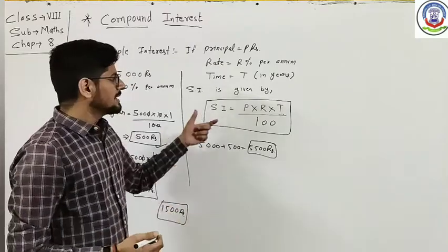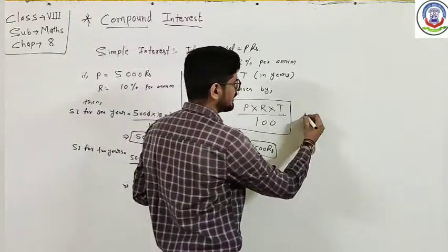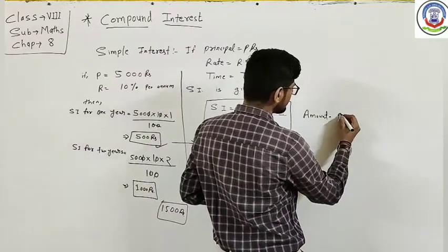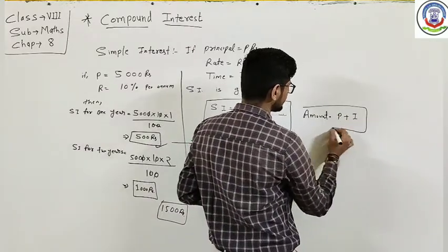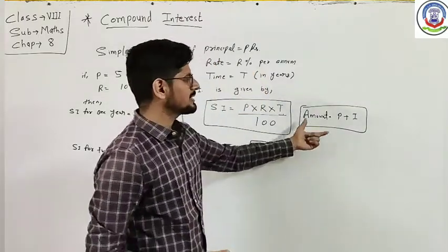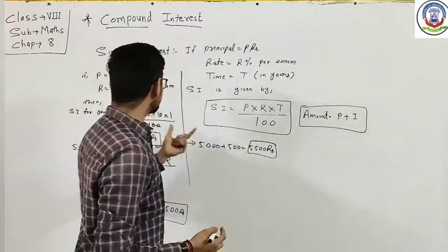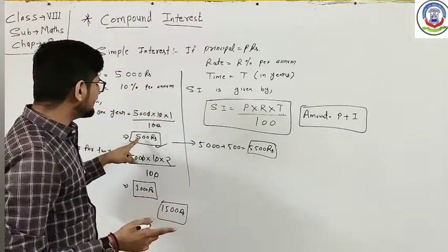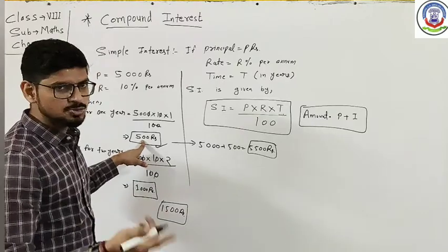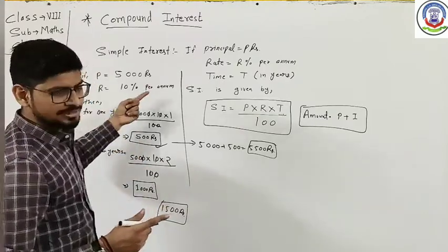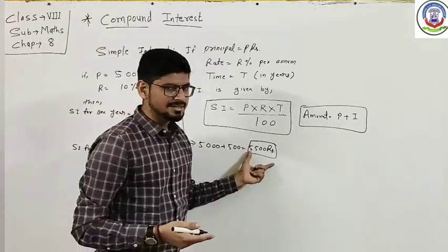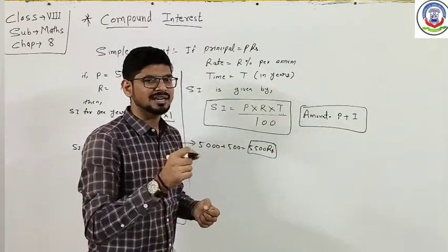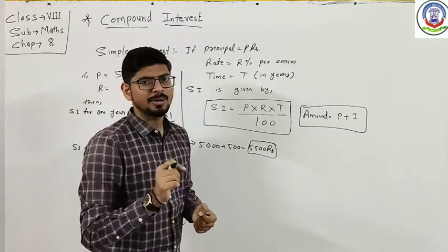Simple Interest के लिए Amount का formula है: Amount = Principal + Interest, यानि A = P + I. Suppose आपने 5000 rupees लिए with rate of 10%, तो interest 500 rupees लगा। After 1 year आपको P + I = 5500 rupees pay करने रहेंगे। उसी को हम total amount बोलते हैं। इसके बाद हम Compound Interest देखेंगे।